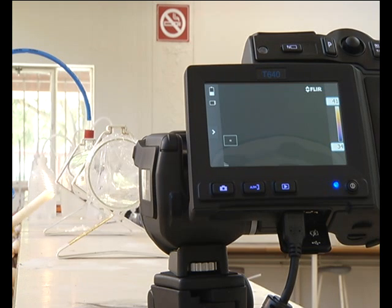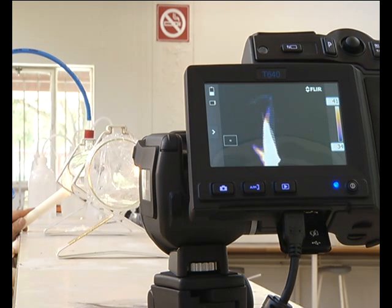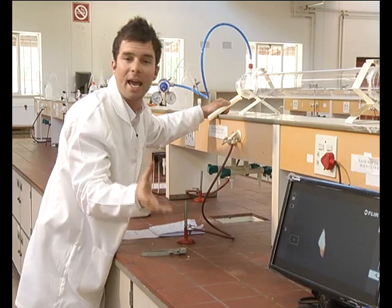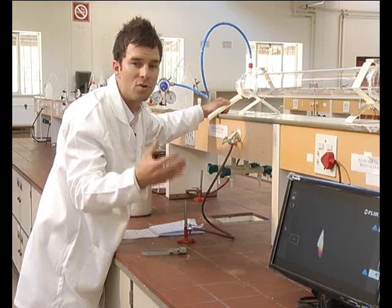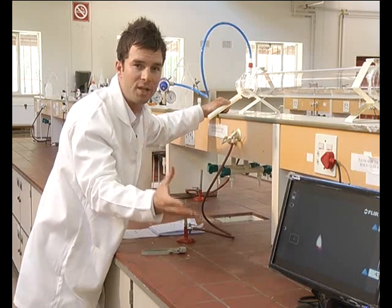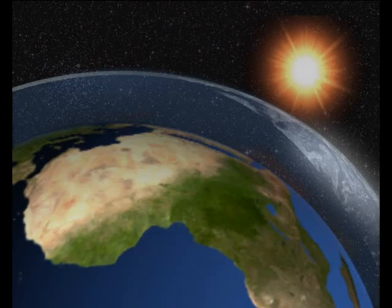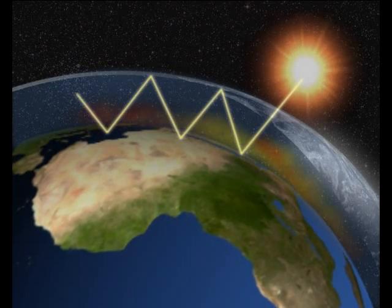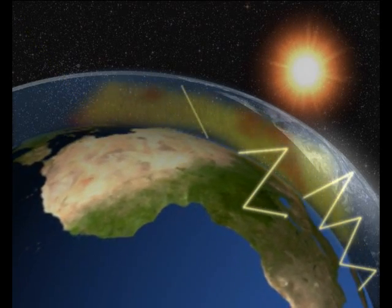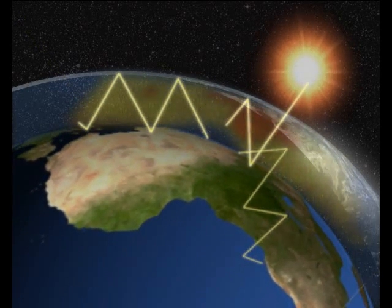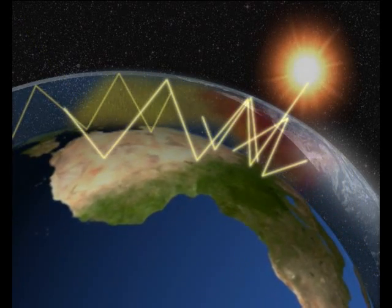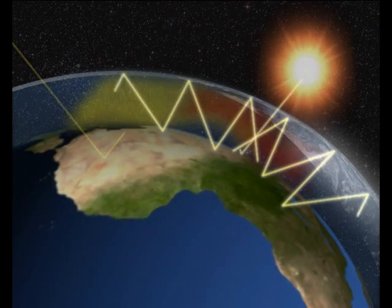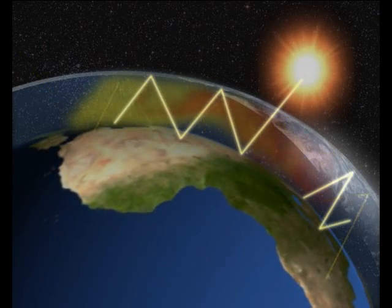The carbon dioxide inside of the glass cylinder actually traps the heat. In essence, the candle's warmth is no longer reaching the camera. This is exactly how other greenhouse gases like carbon dioxide in our atmosphere work, preventing heat from escaping back into space.